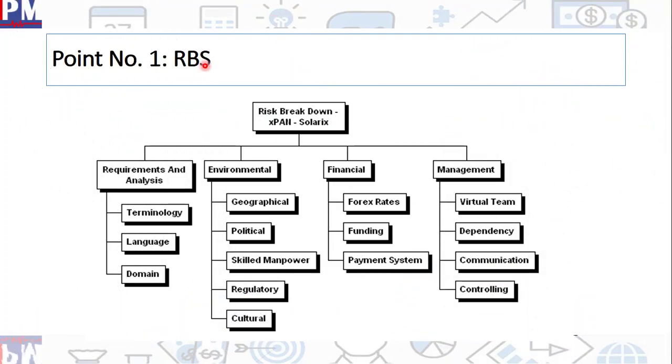Point number one, RBS, Risk Breakdown Structure. For some reason, this part has been explained pretty badly by many of the books and including trainers. When you have this process called plan risk management, which is an output of a process called plan risk management, it does not identify risks. But what it does, it actually finds out the major categories of risks which are applicable to this particular project.